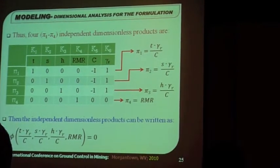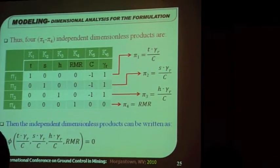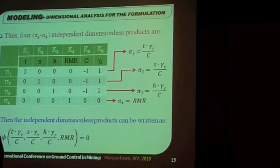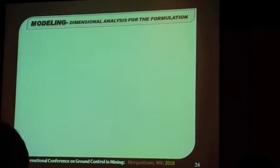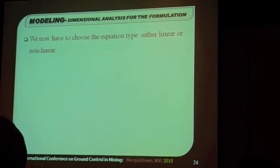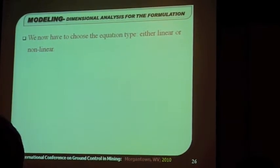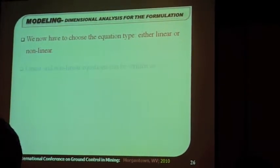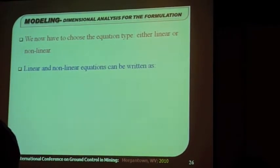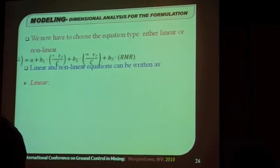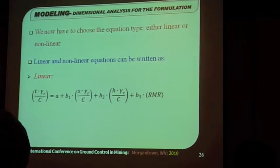Therefore, the independent dimensionless products can be written as the phi of all these, which is a function of all these four. So, this equals zero by definition. There's one thing else, another thing we have to decide is we now have to choose the equation type, either linear or nonlinear. The formulae for both of them are here.